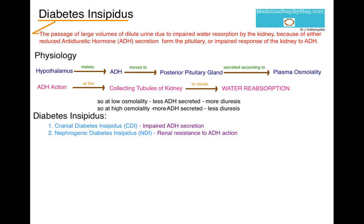Diabetes insipidus can either be cranial diabetes insipidus, whereby there is impaired secretion of the ADH, or it is nephrogenic diabetes insipidus, whereby there is renal resistance to the action of ADH. So ADH causes reabsorption of water at the kidneys so that you pass less urine. In diabetes insipidus, either there is a problem with its production — cranial diabetes insipidus — or it is not working at the kidneys — nephrogenic diabetes insipidus — and there is a large volume of urine production.